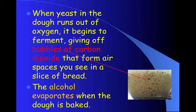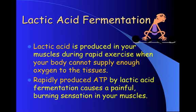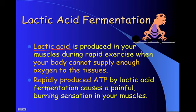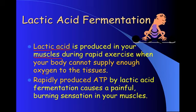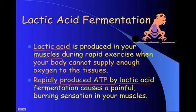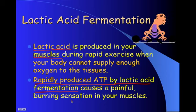The other type of fermentation is lactic acid fermentation. This is produced in your muscles during rapid exercise when your body cannot supply enough oxygen to the tissues, causing your muscles to cramp up. Rapidly produced ATP by lactic acid fermentation causes a painful burning sensation in your muscles. When you get muscle cramps, that's due to lactic acid fermentation — your body cannot supply enough oxygen to its tissues.